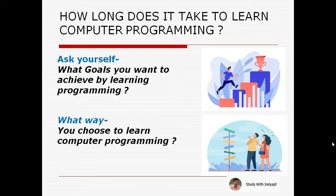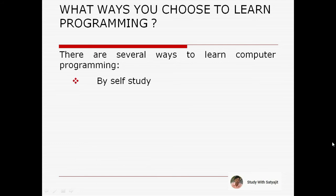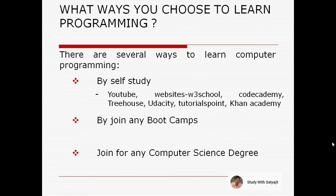There are a number of branches in computer programming which offer a plethora of opportunities to start your professional career as a programmer. There are several ways to learn: by self-study, by joining boot camps, or by joining a computer science degree program. For self-study, you can use YouTube or online websites such as W3Schools, Code Academy, Treehouse, Udacity, Tutorial Point, or Khan Academy.